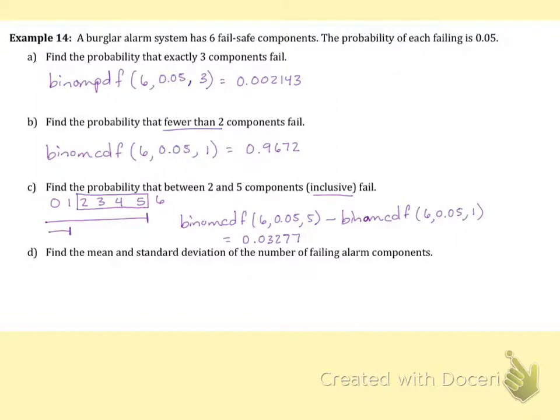So I'd like to make up one more problem because I haven't done any examples where I use the complement. So I want to add, before I do part D here, I'm going to jump to like a part E. And I want to find the probability that more than two fail.